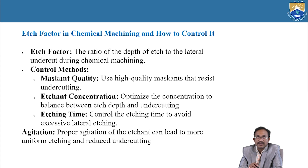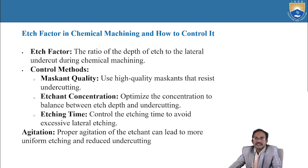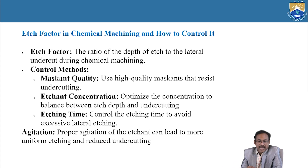H factor in chemical machining and how to control it. H factor definition: the ratio of the depth of etch to the lateral undercut during chemical machining. Control methods: maskant quality — use high-quality maskant that resists undercutting; etchant concentration — optimize the concentration to balance between etch depth and undercutting; etching time — control the etching time to avoid excessive lateral etching; agitation — proper agitation of the etchant can lead to more uniform etching and reduce undercutting.